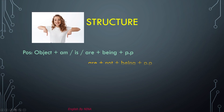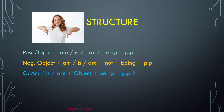The negative form is simple — just add 'not' after am/is/are: object + am/is/are + not + being + past participle. The question form uses your to-be verbs: am/is/are + object + being + past participle.